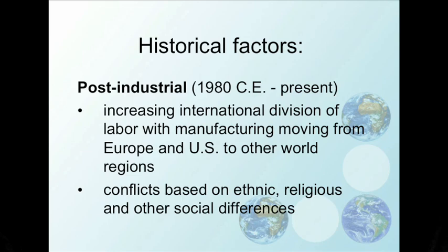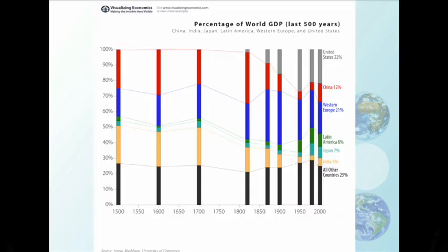Another factor in understanding uneven development is what we could call the post-industrial era, from about the 1980s to the present. We see a change in the international division of labor — where things are made and by whom — with manufacturing moving from the United States and Europe to other regions of the world, especially Asia. This chart illustrates that shift, showing the percentage of world GDP over the last 500 years.